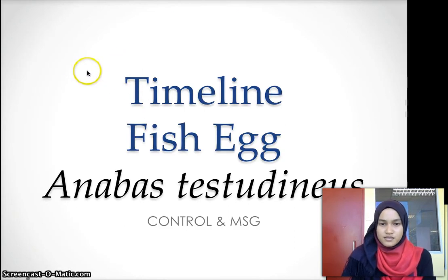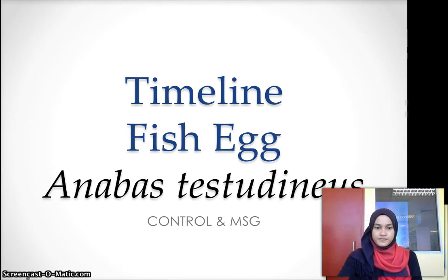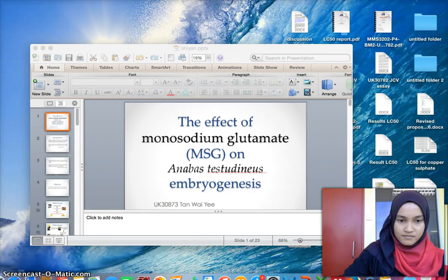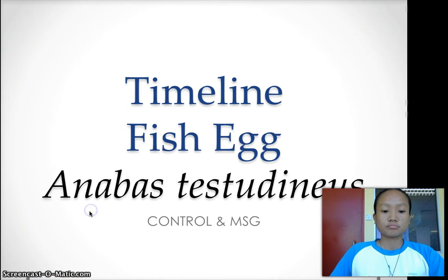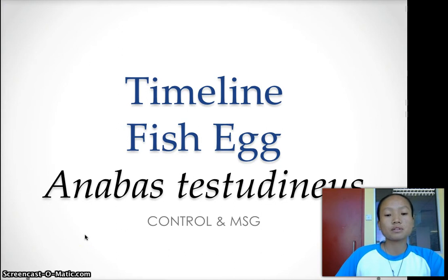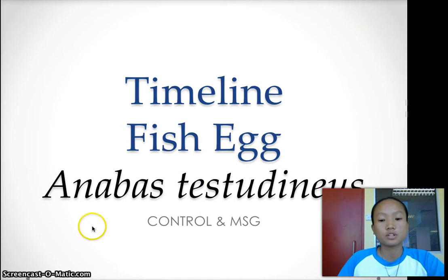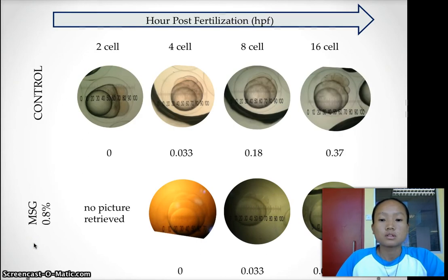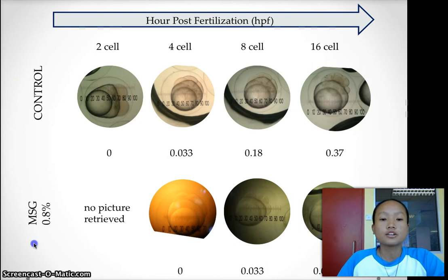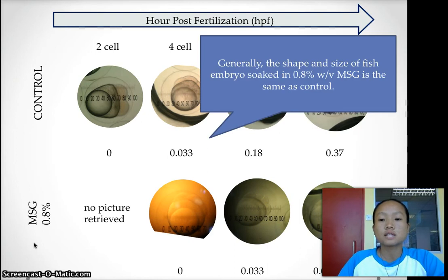This is the timeline of the fish egg for Anabas testudineus for control and MSG. As we go along the slides, you will see that generally the shape and size of the fish embryo soaked in 0.8% MSG is actually the same as the control.